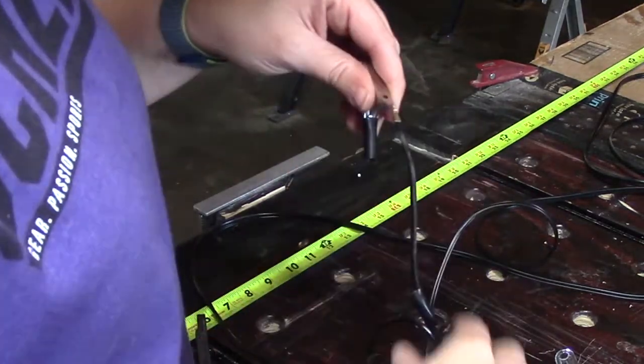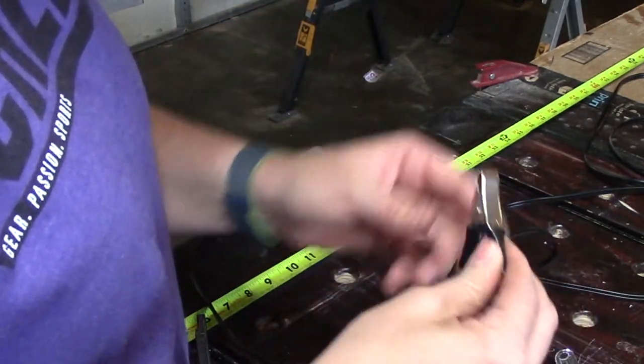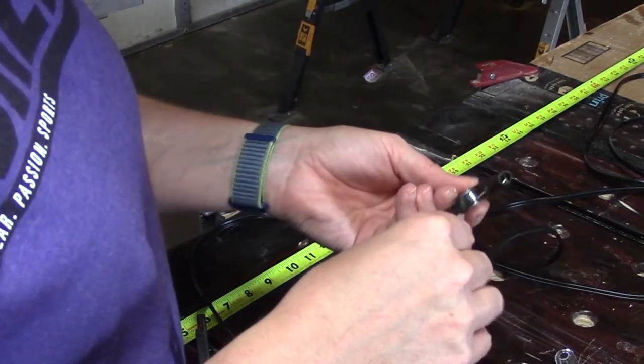When you are satisfied your wire is secure you can slide that rubber back over the clamp and now you are set to go. Repeat this step with the red clamp.